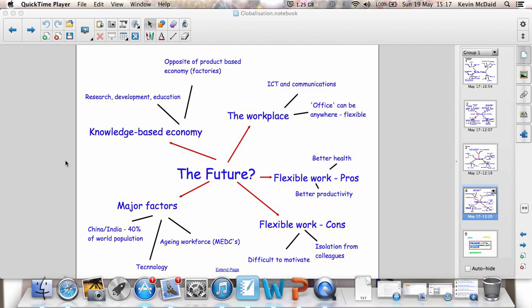Online business. The very opposite of a product-based economy, which is basically factories. The workplace isn't always now about going into work. The workplace is a lot more of a fluid concept. Thanks to communications, the internet, and ICT, the office can be anywhere. You can work from home. You can work from a cafe, as long as you've got a computer.